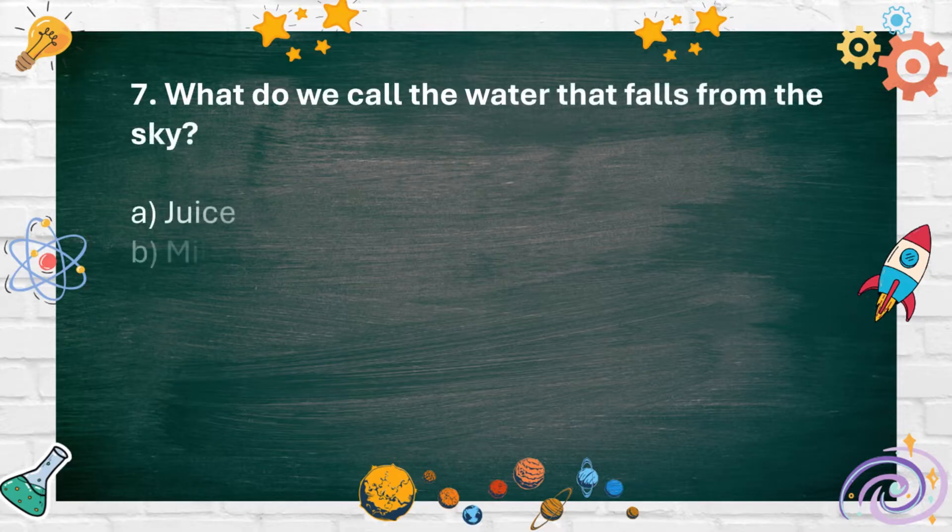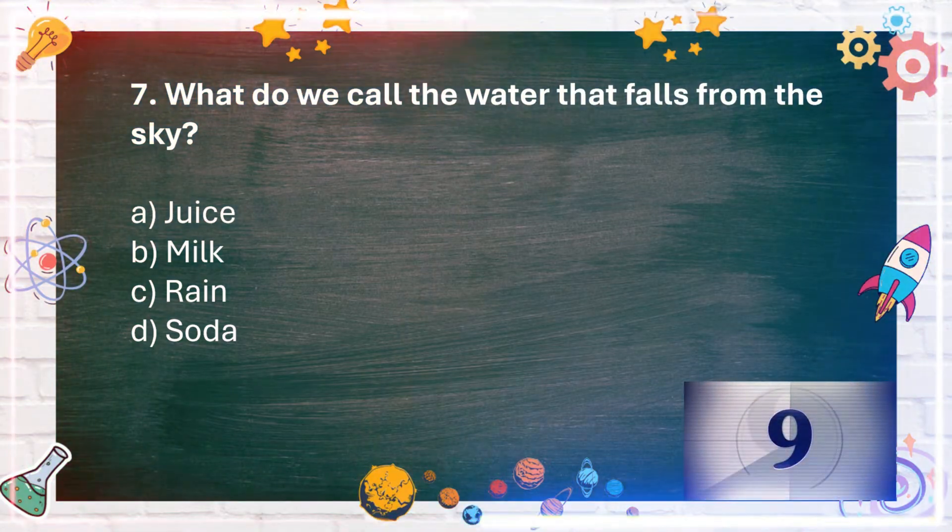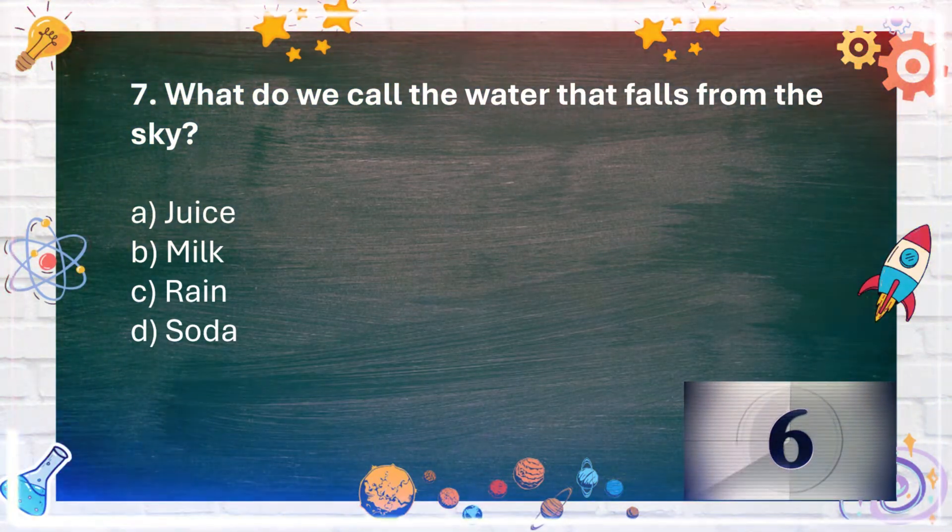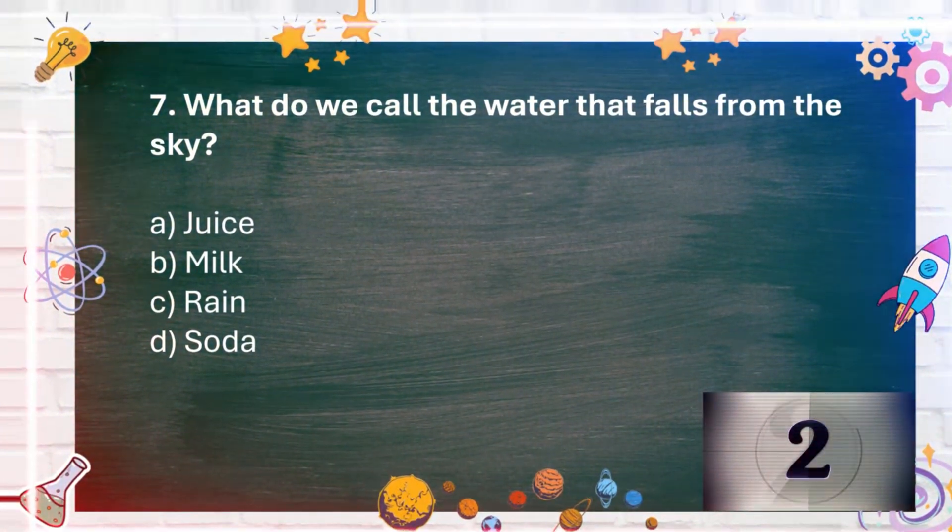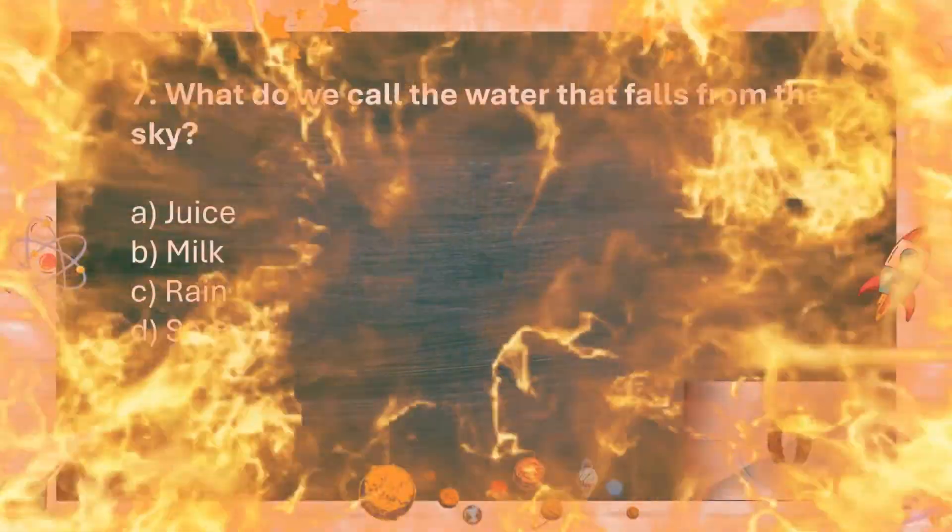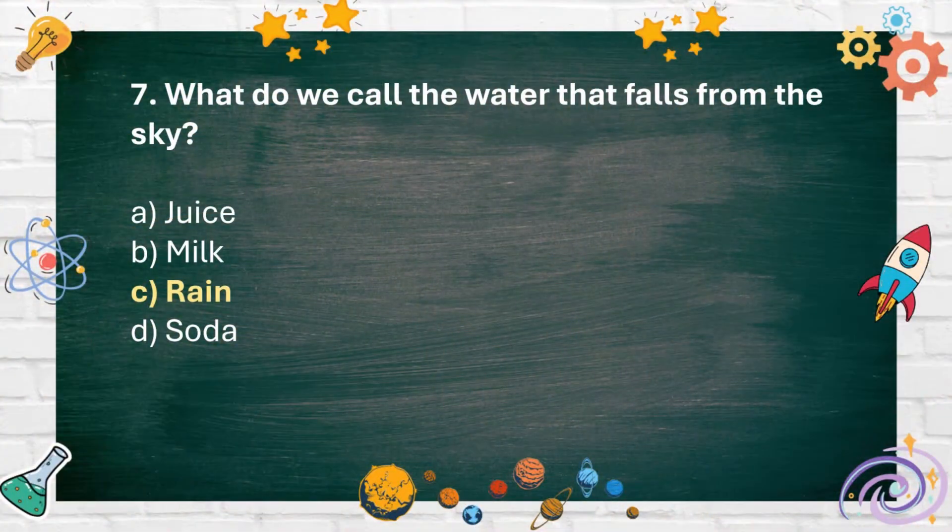Number 7. What do we call the water that falls from the sky? A. Juice B. Milk C. Rain D. Soda. The answer is C. Rain.